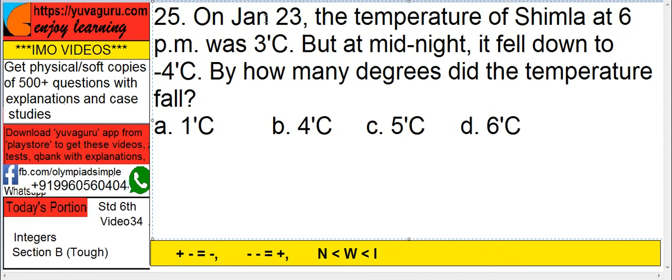On January 23rd, the temperature of Shimla at 6 PM was 3 degrees centigrade, but at midnight it fell down to minus 4 degrees centigrade. How many degrees did the temperature fall?